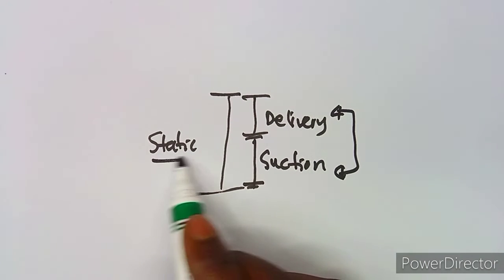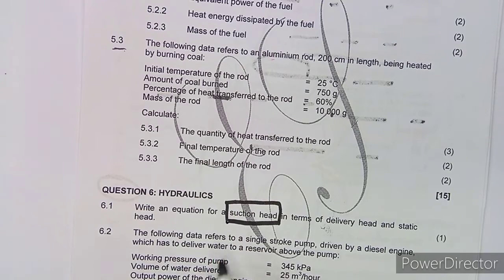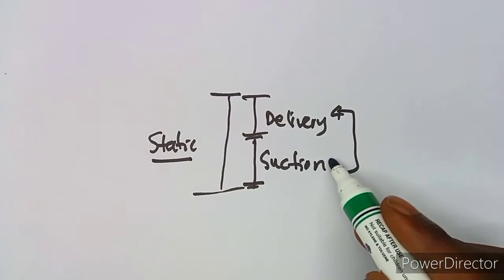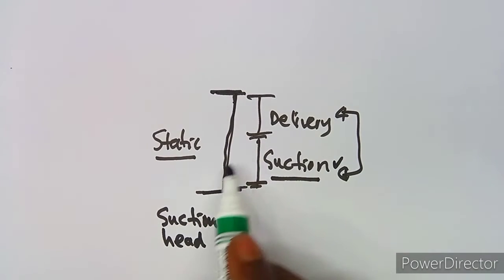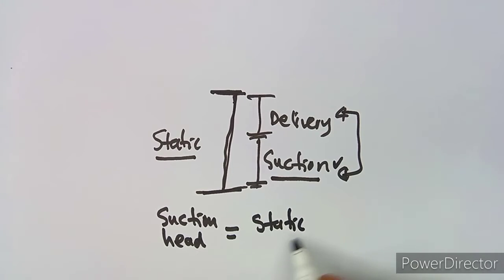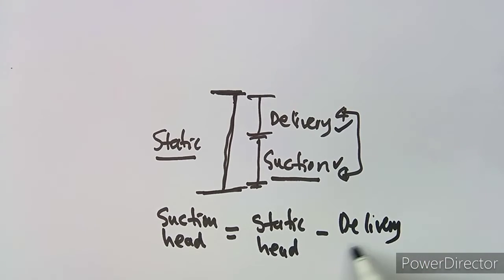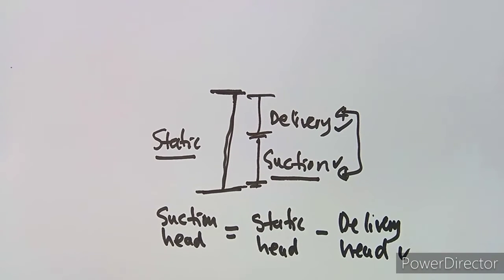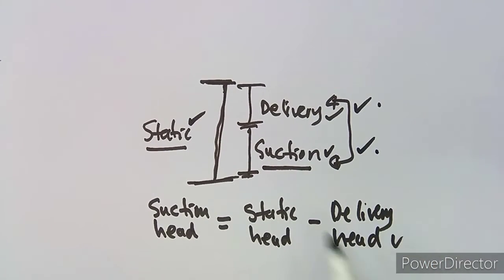If you combine the delivery head and suction head together, they give you the static head. So we want an equation for suction head. The suction head is equal to the static head minus the delivery head — because the static head is the combined head of delivery head plus suction head, so you are simply making suction head the subject of the formula. That's what we have for question 6.1.